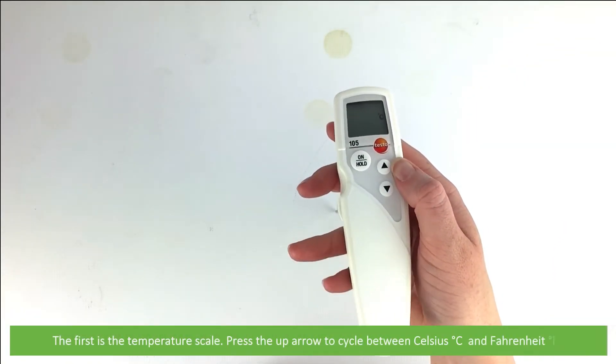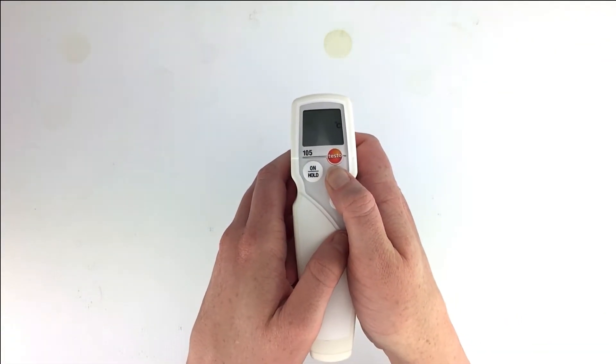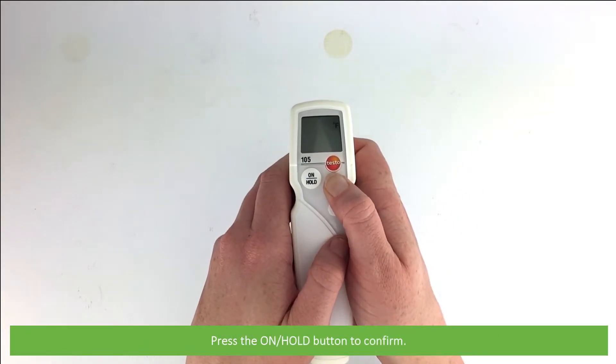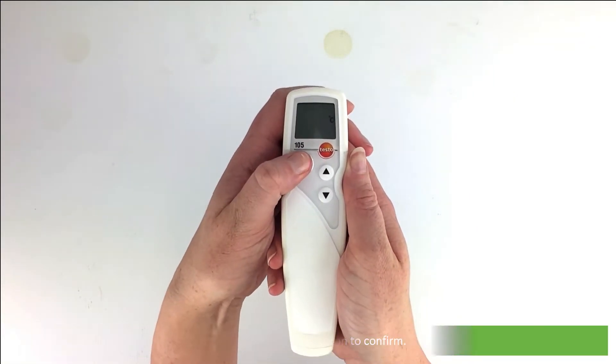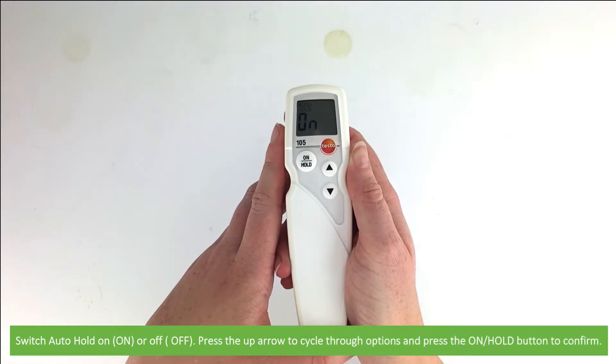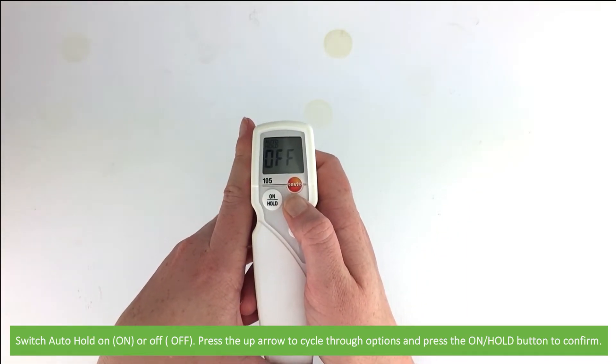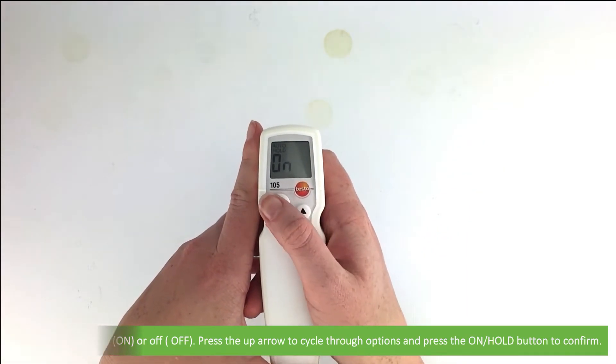The first is the temperature scale. Press the up arrow to cycle between Celsius and Fahrenheit. Press the on hold button to confirm. Switch auto hold on or off. Press the up arrow to cycle through the options and press the on hold button to confirm.